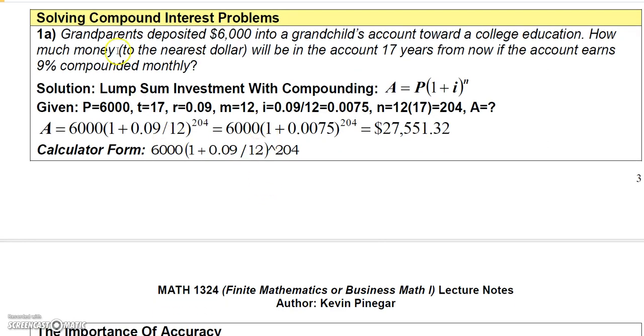Let's start solving some basic compound interest problems. Grandparents deposited $6,000 into a child's account toward college education. How much money will be in the account 17 years from now if the account earns 9% compounded monthly? This is a lump sum investment with compounding, so we'll use this formula.